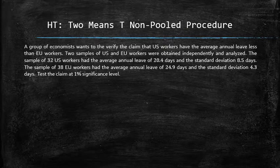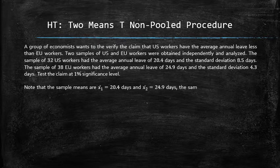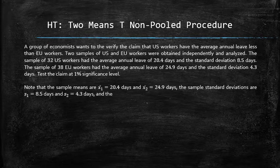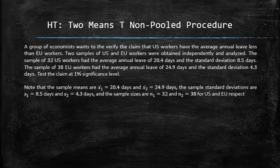First, let's note that the sample means are 20.4 days and 24.9 days. The sample standard deviations are 8.5 days and 4.3 days. And the sample sizes are 32 and 38 for United States and European Union workers respectively.